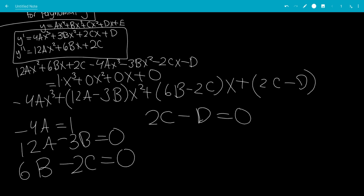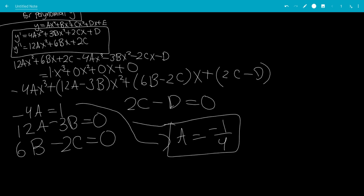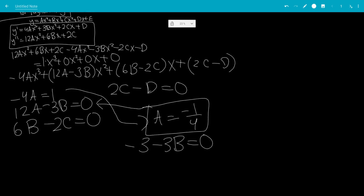So negative 4a equals 1 tells us that a is minus 1 fourth. Plugging that in to this equation, 12 times negative 1 fourth is minus 3. Minus 3b equals 0. And what b value satisfies this, that would be minus 3b equals 3. So b is minus 1.